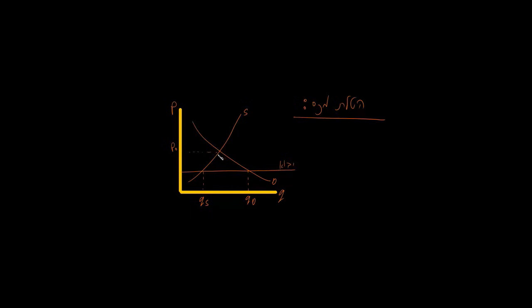This graph here shows us exactly what that looks like. Without any trade, the price would settle way up high where the domestic supply and demand curves cross. But with free trade, the global market steps in and pushes that price all the way down to the world price, which we call P star. And that is fantastic news for consumers. It means lower prices for everybody.